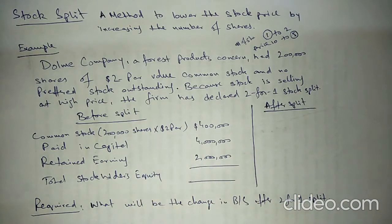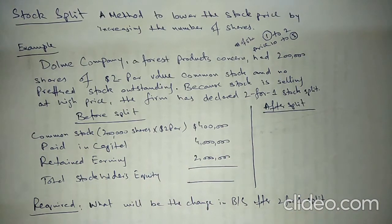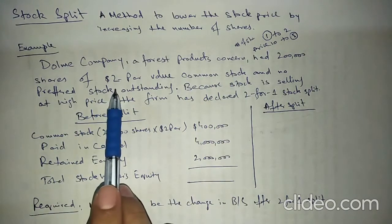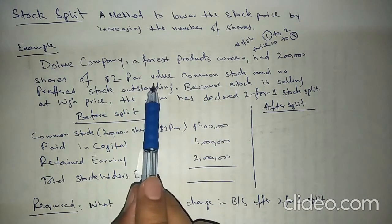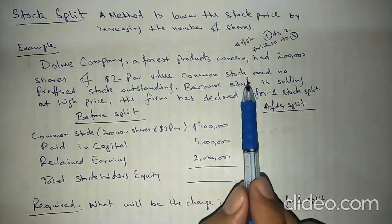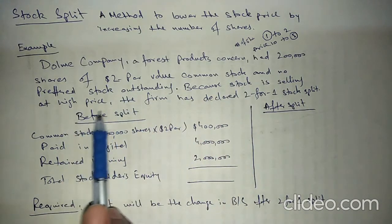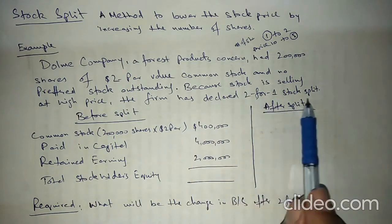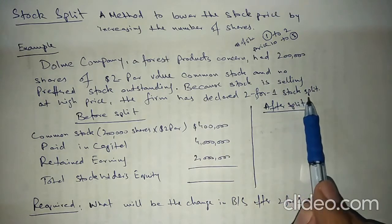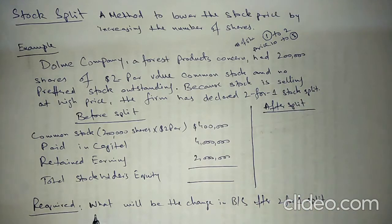I will illustrate this with an example. Dolme Company in Forest Products has two lakh common shares with a dollar two par value and no preferred stock. Because the stock is selling at a higher price, the firm has declared a two-for-one stock split. The requirement is: what will be the change in the balance sheet after the two-for-one stock split?